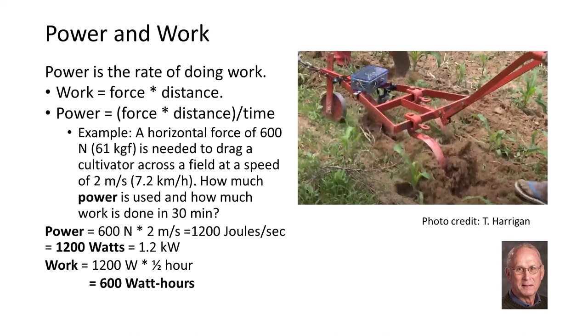The power generated is calculated as 600 newtons times 2 meters per second equals 1,200 joules per second, which is equivalent to 1,200 watts or 1.2 kilowatts. The work is 1,200 watts times one half hour equals 600 watt hours.